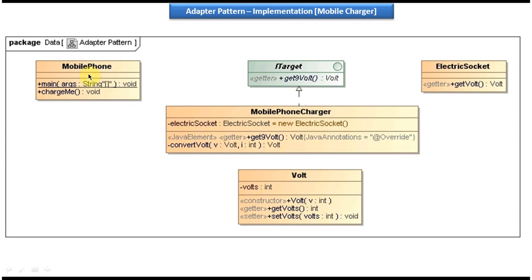The chargeMe method will call this get9Volt method. This is the class diagram of the scenario we just saw, and I will show you the code in Eclipse.